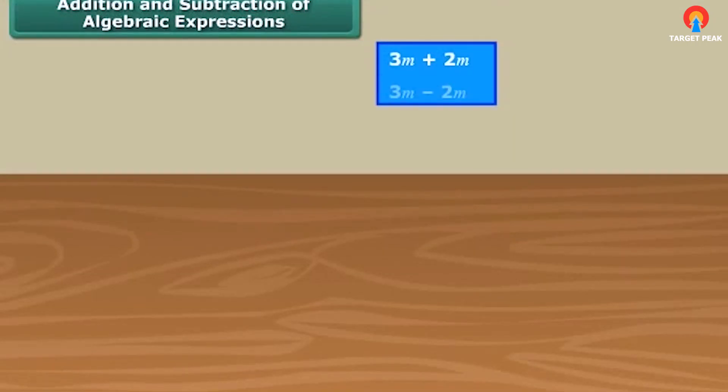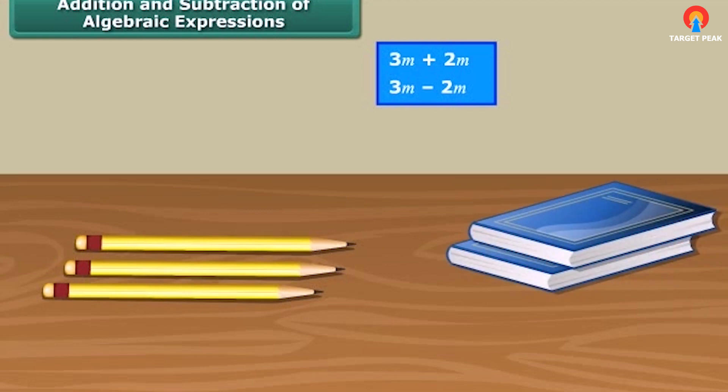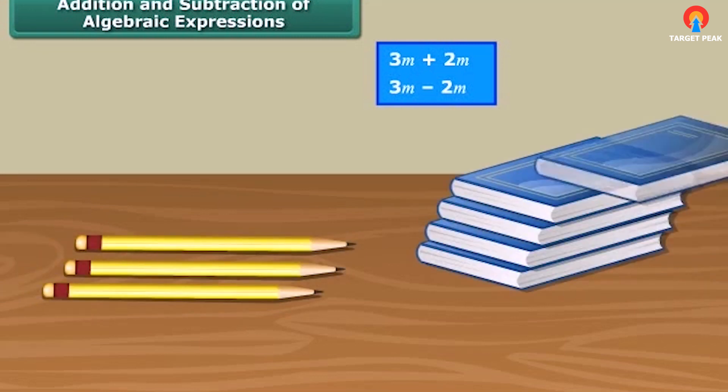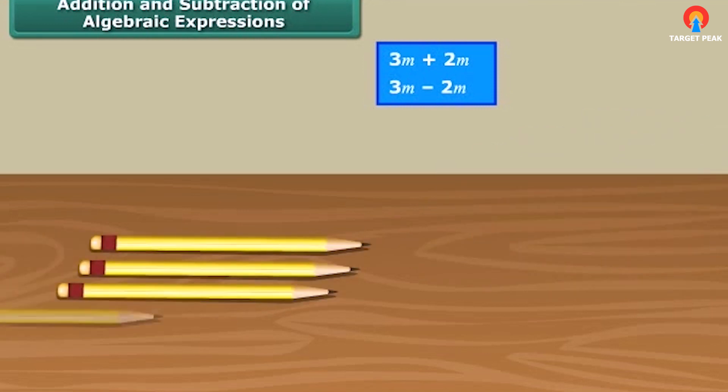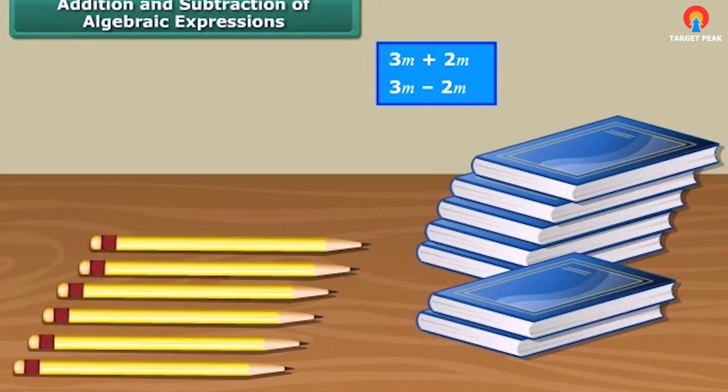We can only add or subtract like terms. But why is it so? Think of it like this. On a table, we have three pencils and two books. We cannot add the three pencils to the two books because they are not the same kind of objects. Now, if we get another three pencils and five books, all together, we now have six pencils and seven books. Now again, we can't combine these objects since they are different.